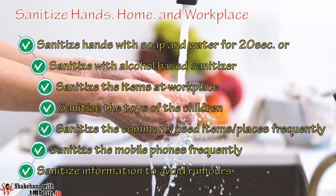Now come to the third S: Sanitization. To prevent the transmission of COVID-19, the role of sanitization is utmost important. It includes washing hands with soap and water for 20 seconds or sanitizing with an alcohol-based sanitizer. Sanitize items at the workplace like tabletops, laptops, paper trays, pen holders, etc. Sanitize the toys of children and avoid kissing them. Sanitize things which are commonly used or frequently touched at the workplace like door handles, water taps, bathrooms, and desktops.